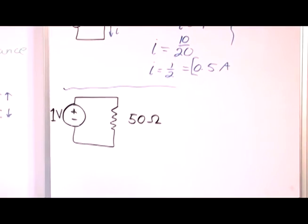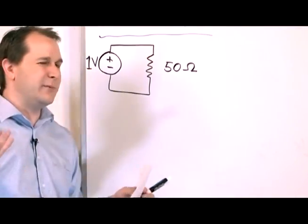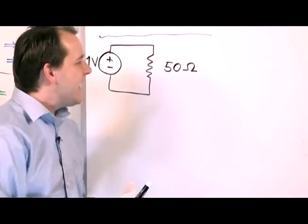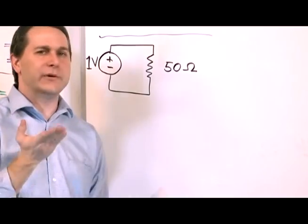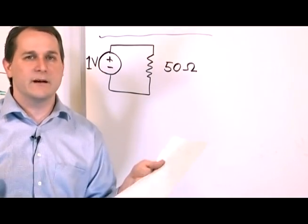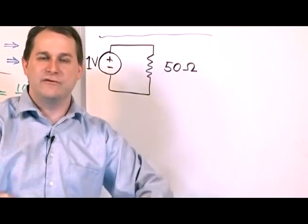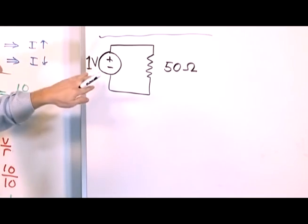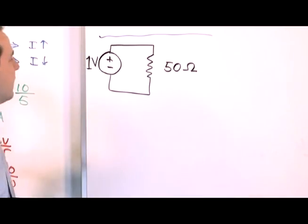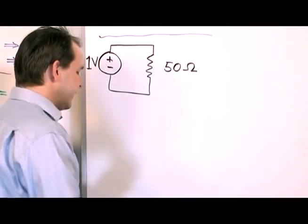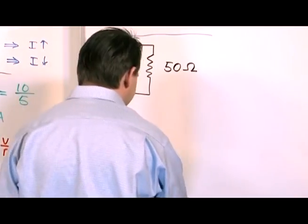So this is quite different. See what we've done now is we've decreased the voltage, which means we've decreased the push. And at the same time we've also increased the resistance. So both of those things combined together should dramatically decrease our current, because now we have less of a push and we have more resistance in the way.